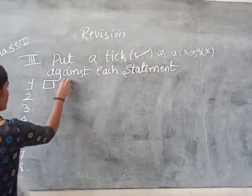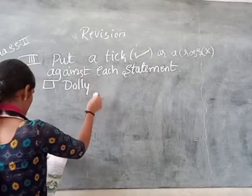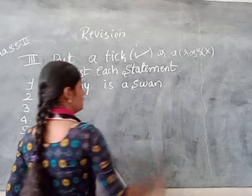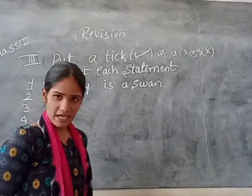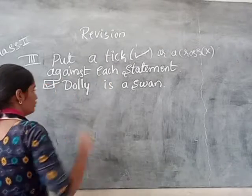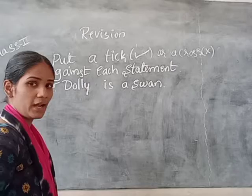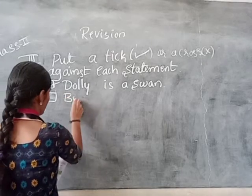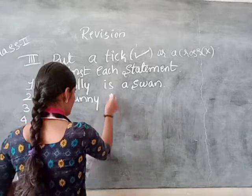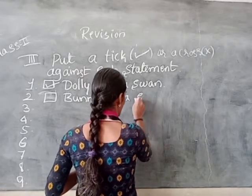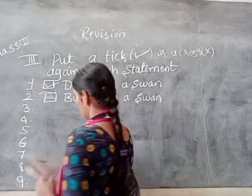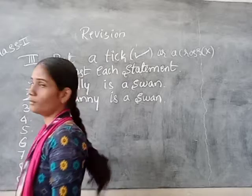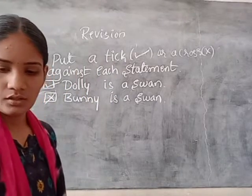First one: Dolly is a swan. Is Dolly a swan? Yes, it is correct. So for that, you have to take the right mark like this — write it in your examination. Next question: Bunny is a swan. Is Bunny a swan? No. So for that, you have to take the wrong mark.